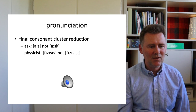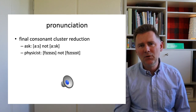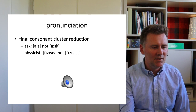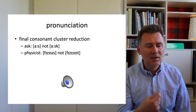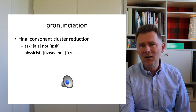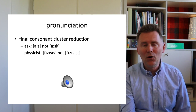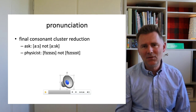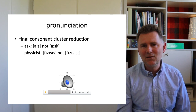Here's a third difference with regard to pronunciation: the phenomenon of final consonant cluster reduction, where you have several consonants at the end of a word and only one of those consonants is actually realized. For example, the word 'ask' has an 's' and a 'k' in sequence, and this is realized without the final 'k.' In the word 'physicist,' we have an 's' and a 't,' and only the 's' is realized. In both cases, the final consonant is missing from the consonant cluster.